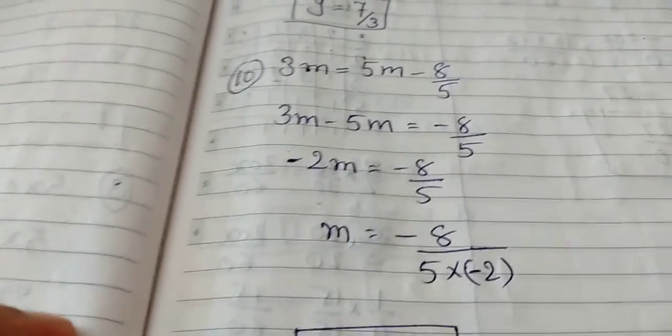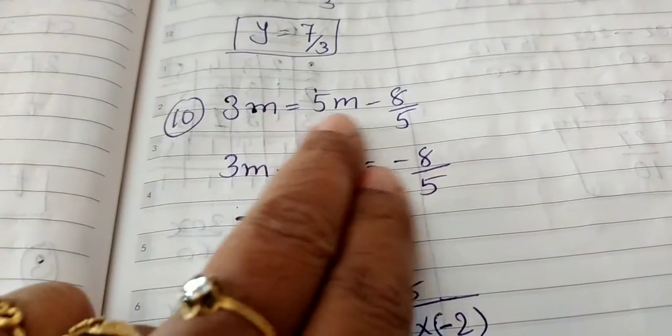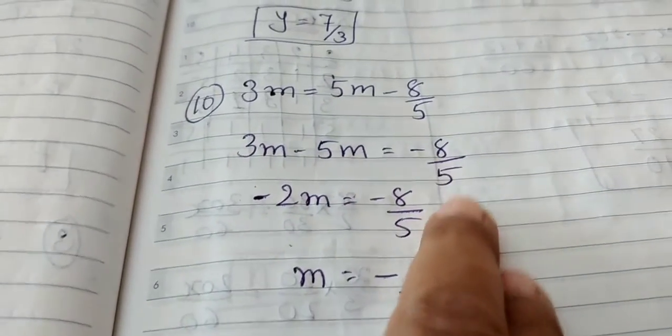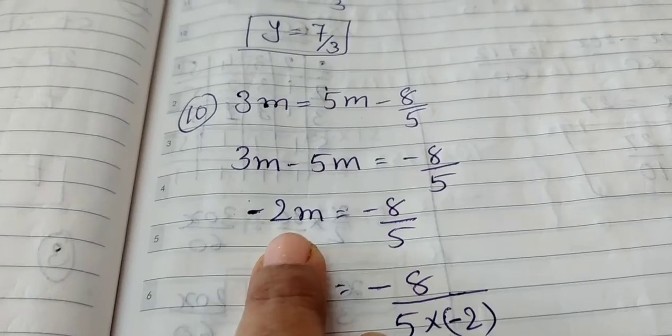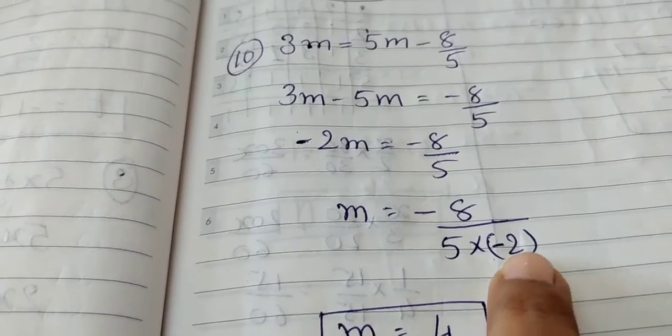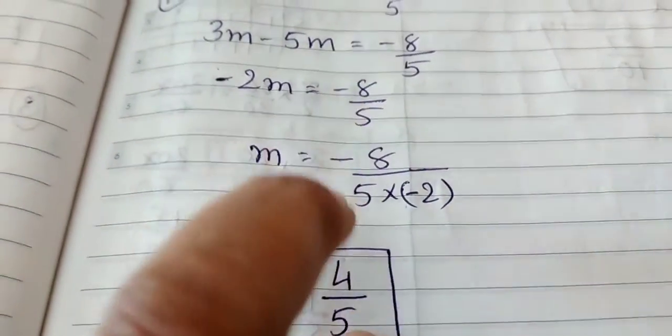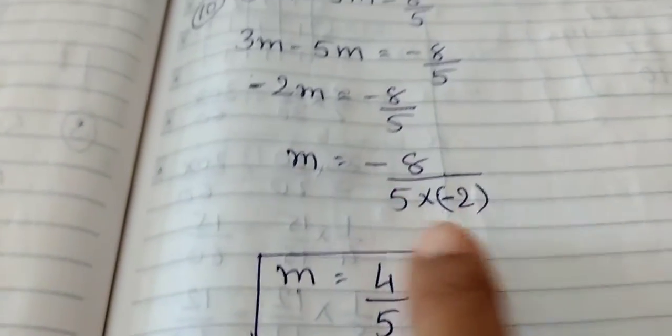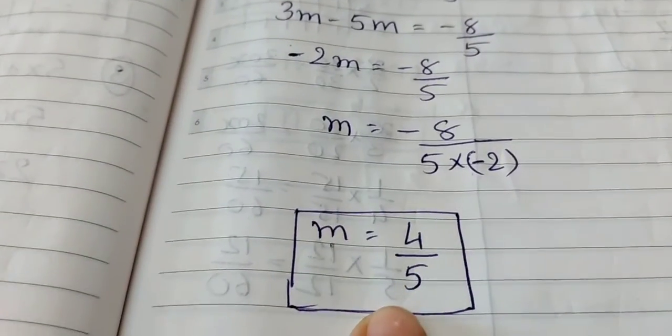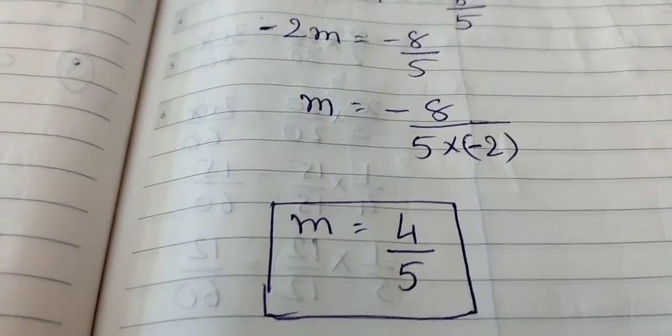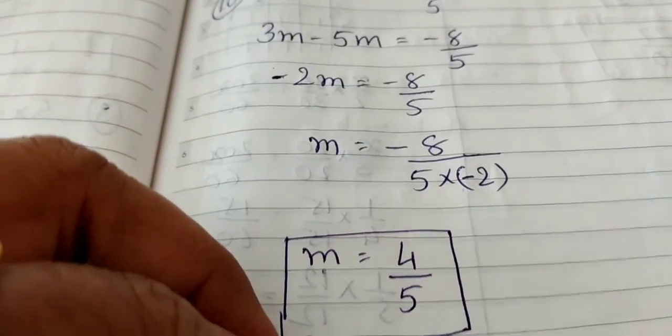Tenth sum, now you can see 3m is equal to 5m minus 8 by 5. Taking 5m on the other side, 3m minus 5m is equal to minus 8 by 5. This gives you minus 2m is equal to minus 8 upon 5. And then you can see on taking minus 2 on the other side, you have m is equal to minus 8 upon 5 multiplied by minus 2. Negative, negative becomes positive. And on dividing 8 by 2, I get 4 upon 5. Therefore, m is equal to 4 upon 5. So is that clear to you? So now, we can move on to the next exercise in the next video.